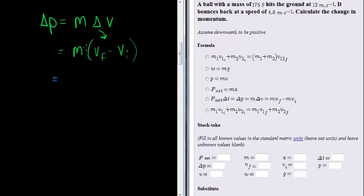First of all, mass is 175 grams. We have a problem. We need it in kilograms. So we simply divide by a thousand to get 0.175 kilograms.